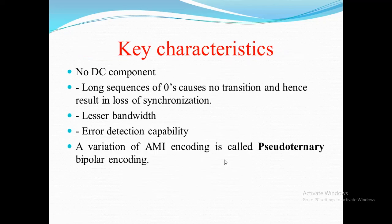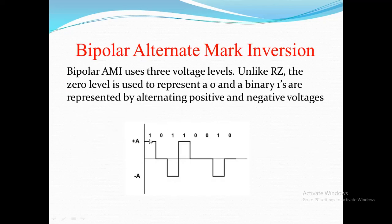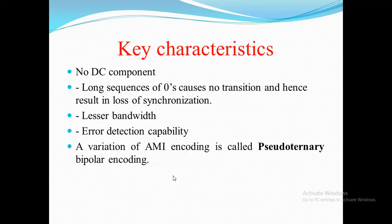Key characteristics of Bipolar AMI: no DC component, but long sequences of zeros cause no transition and thus loss of synchronization. It has lesser bandwidth requirement and has error detection capabilities. A variation called Pseudo Ternary Bipolar encoding is also possible, where instead of alternating 1s, we alternate the 0s - binary 1 is represented at zero voltage and binary 0 uses the alternating positive and negative voltages.